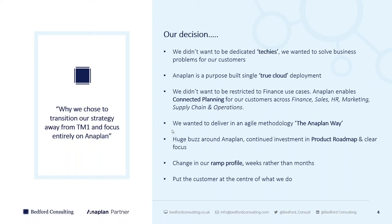We also wanted to deliver in an agile way. Back then we sold six-, twelve-, eighteen-month projects — big engagements where it was very hard for a customer to see the back end of us. With Anaplan it's much quicker — we're talking weeks rather than months. The agile methodology we now use is called the Anaplan Way: we land, deliver a successful project, enable the customer to support the solution long-term, then look at other use cases and evolve the solution into different areas. Very different business model.